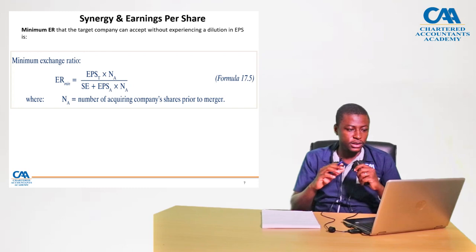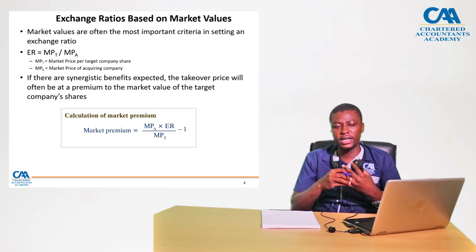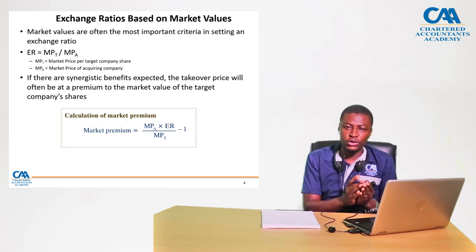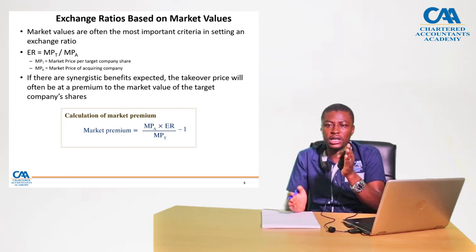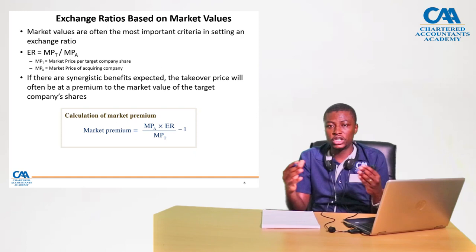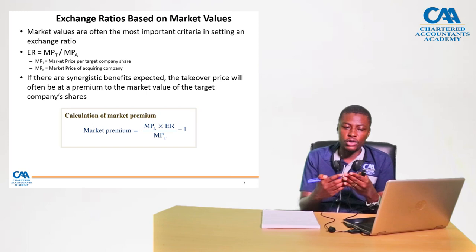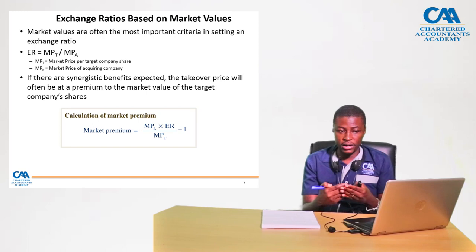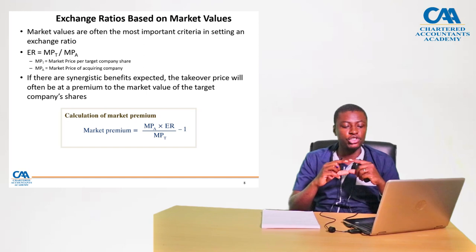You can also calculate exchange ratios based on market values — the market values of the shares of the companies involved in the transactions. Assuming Company A and Company B are listed, you can get their market values and use those to determine the exchange ratio. The exchange ratio based on market values equals the market price of the target company divided by the market price of the acquiring company.